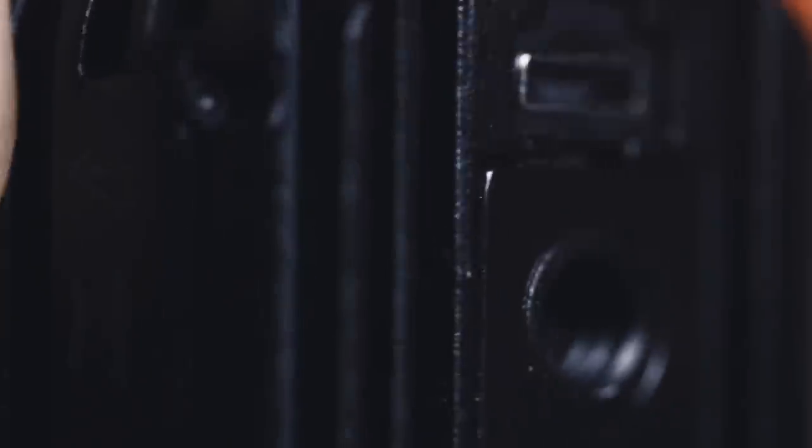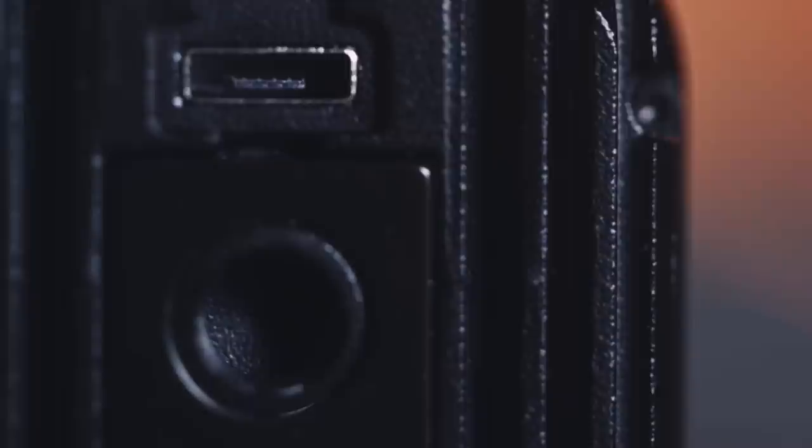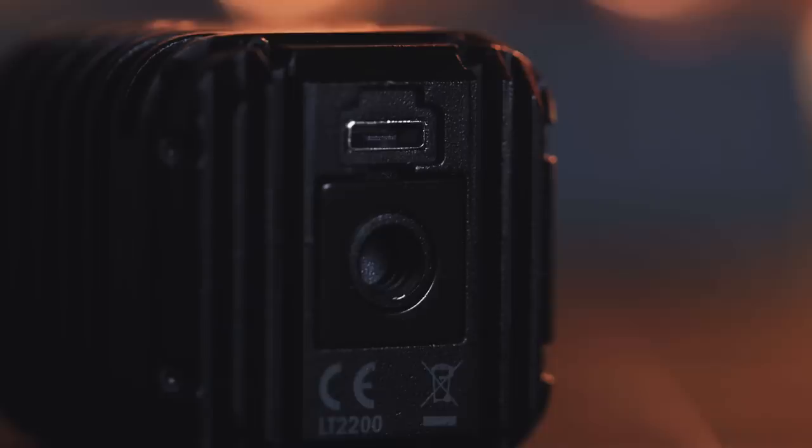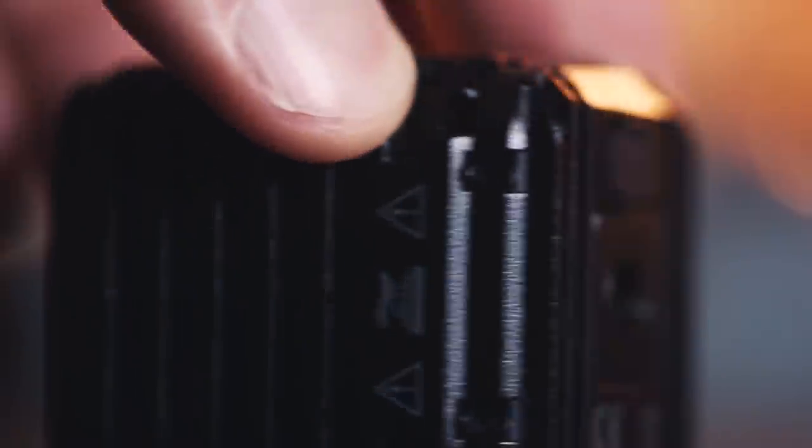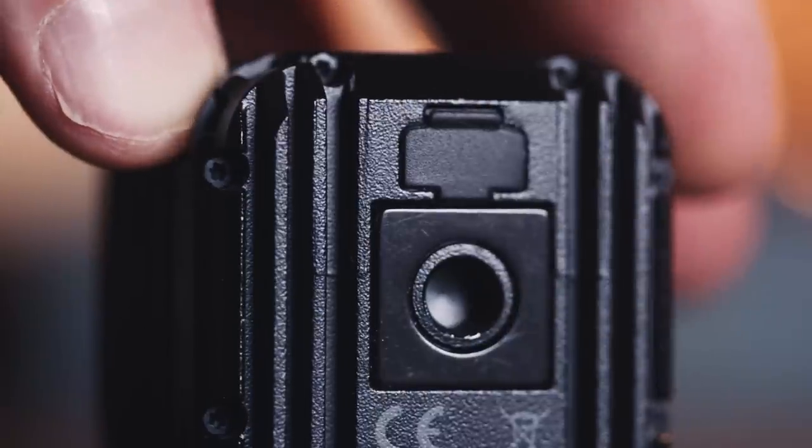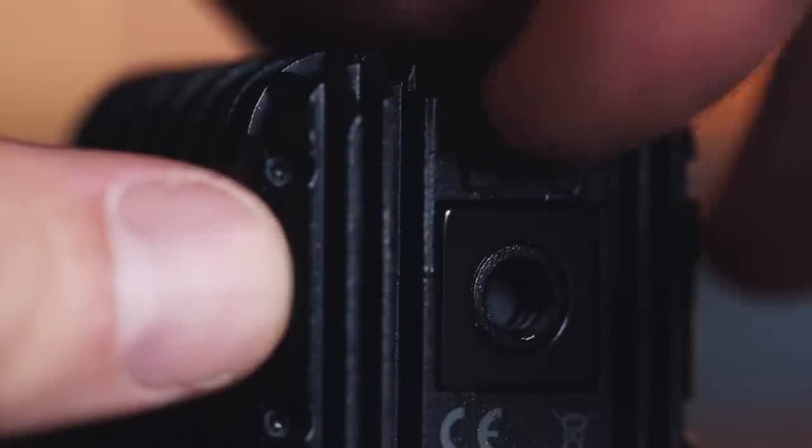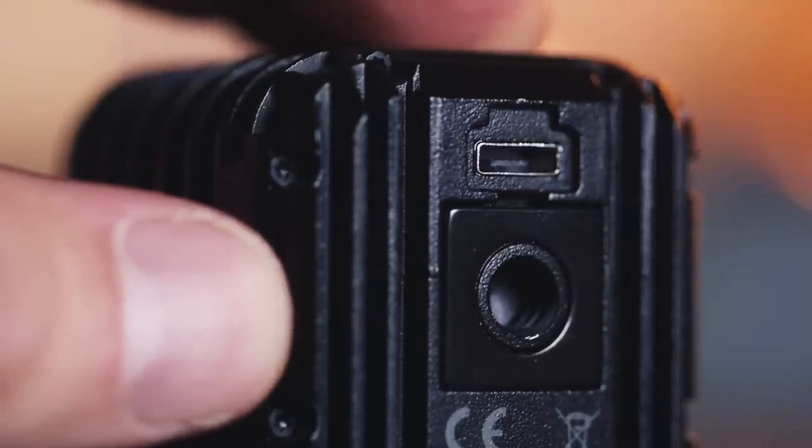Now on the opposite face of the light, there's a standard tripod mount thread and a micro USB port for charging. Covering the micro USB port is a little rubber dust cover. This thing can get lost pretty easily, but the good news is if you do lose it, the micro USB port is waterproof, so you won't actually lose any functionality. I've lost mine about 8 times now, but I've always been lucky enough to find it.